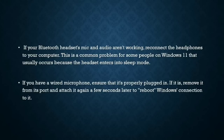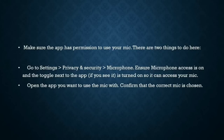Make sure the app has permission to use your mic. There are two things to do here. Go to Settings, then Privacy and Security, then Microphone. Ensure microphone access is on, and toggle the switch next to the app — if you see it — to turn it on so it can access your mic. Then open the app you want to use the mic with.